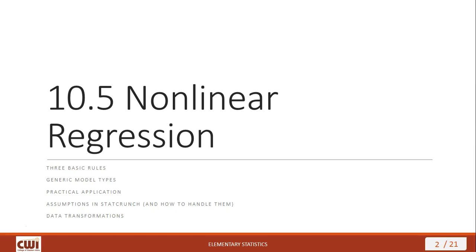There are three basic rules we need to recognize when dealing with non-linear regression, so we'll start by going over those. We'll look at the generic model types we most commonly encounter. We'll look at how to apply those model types practically, and at assumptions in StatCrunch, since we're going to be using StatCrunch to make our models. Then we're going to wrap up looking at data transformations — this time like Casper, the friendly ghost — because the data transformations are actually going to make it easier for us to get the information we need to answer our assignment questions.